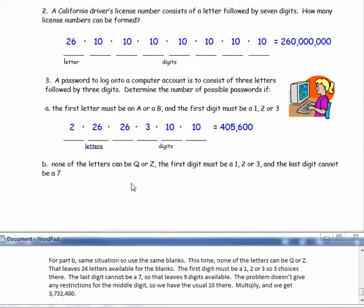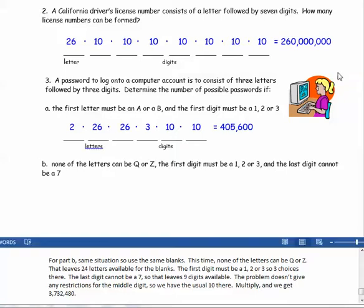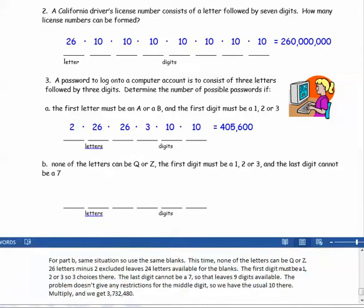For part B, same situation, so use the same blanks as part A. This time, none of the letters can be a Q or Z. Twenty-six letters minus the two that are excluded leaves twenty-four letters available for the blanks for the letters.